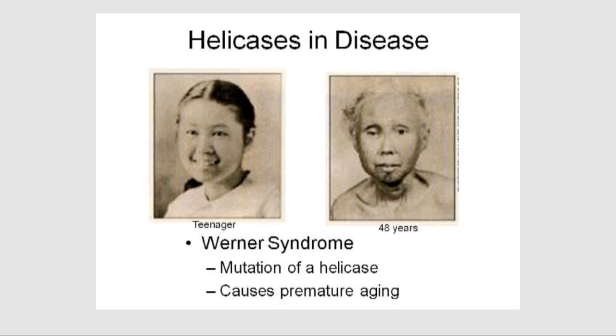The importance of these enzymes — these proteins called helicases — is illustrated in a couple of ways. One is the sheer number: there are literally over 100 different helicases, because there are so many different processes that require manipulation of DNA that each process requires its own helicase or multiple helicases. There are some diseases directly attributed to dysfunction of certain helicases. For example, this image shows a teenager who has Werner's syndrome, which is basically a single mutation in a single helicase resulting in premature aging — this is a picture of the same individual at age 48. Somehow a domino effect occurs whereby this one protein's dysfunction leads to a dramatic disease effect.